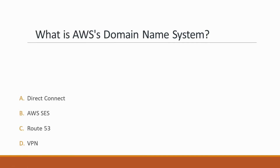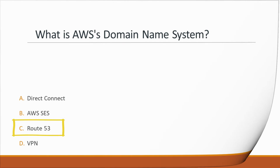Next question: What is AWS's domain name system? Options: A. Direct Connect, B. AWS SES, C. Route 53, D. VPN. Correct answer is option C, Route 53, because Amazon Route 53 is a highly available and scalable cloud DNS web service designed to give developers and businesses an extremely reliable and cost-effective way to route end-users to internet applications by translating names into numeric IP addresses.